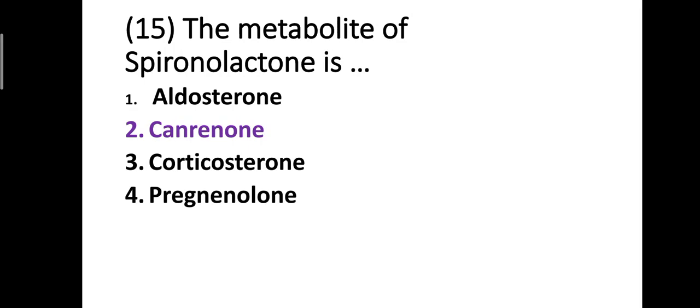Last question: the metabolite of spironolactone is — option one: aldosterone, option two: canrenone, option three: corticosterone, option four: pregnenolone. The correct answer is option two — the metabolite of spironolactone is canrenone. Thank you for watching this video till the end.